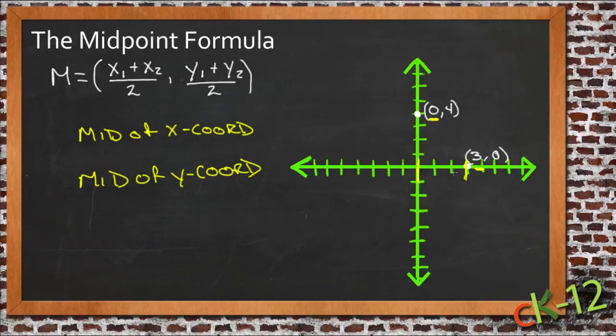So we want to find the average of 0 and 3. Well, to find the average of two numbers, what you do is add them together and divide by 2, right? Well, that's what we have up here. If you look at the midpoint formula, we have the first x coordinate and the second x coordinate, and they're added together and divided by 2. So we're just finding the average of the x values.